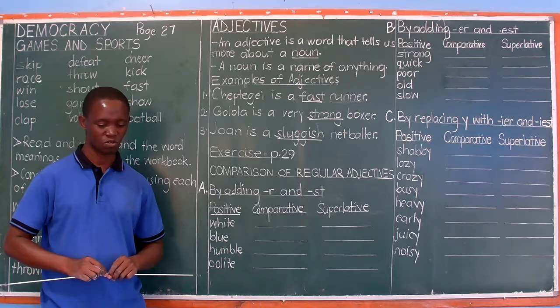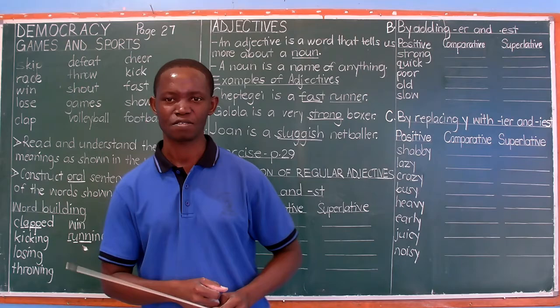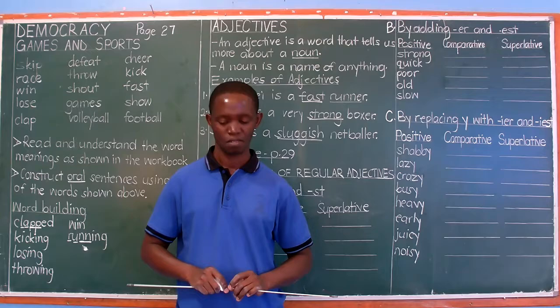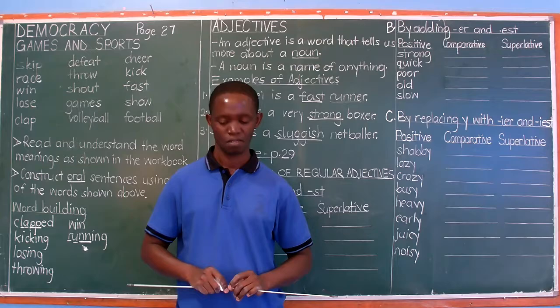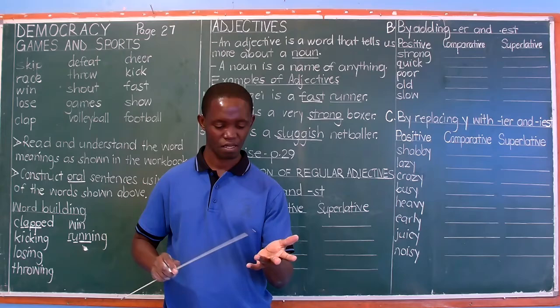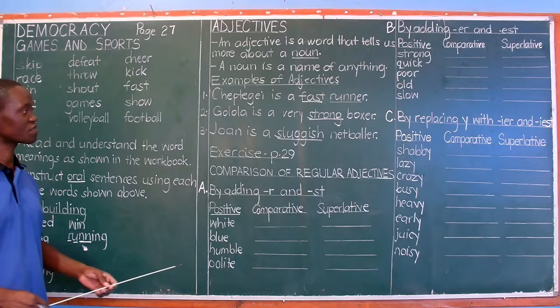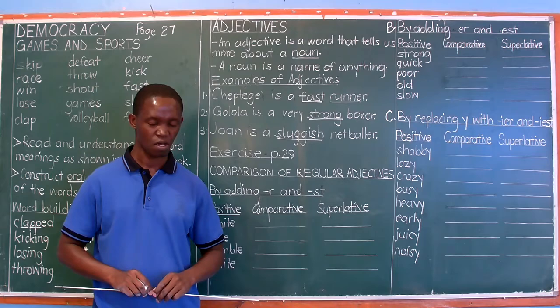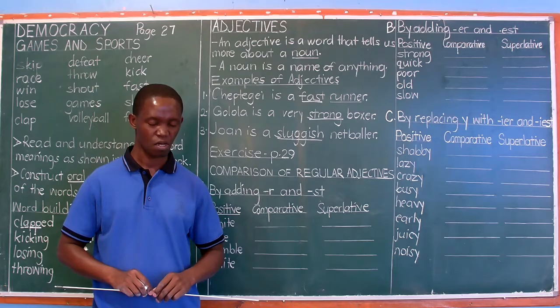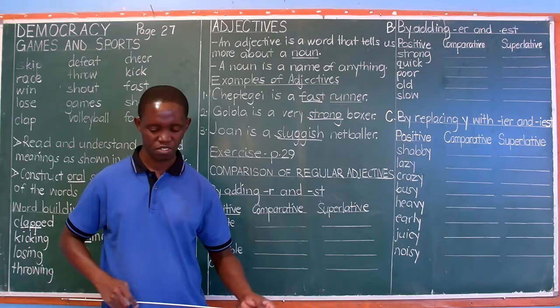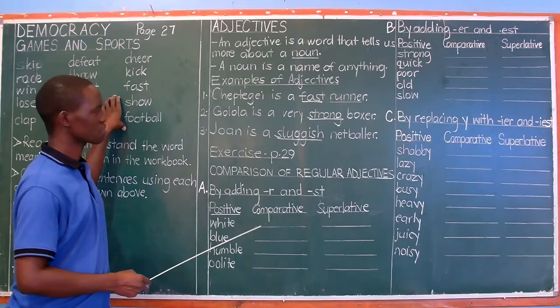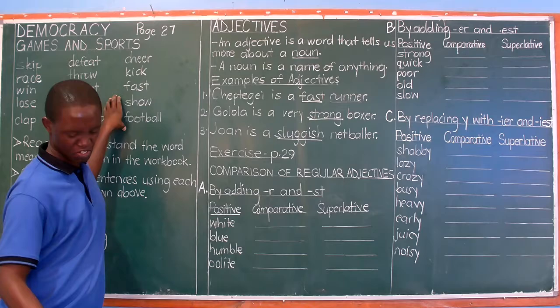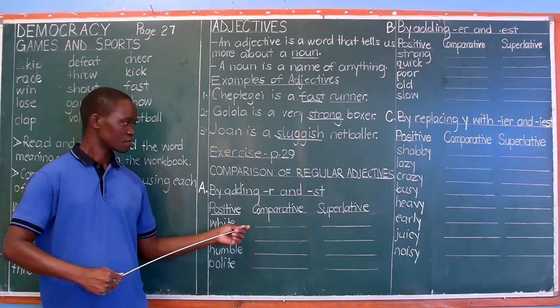Read and understand each sentence first before you start underlining. Identify the adjective, identify the noun it is describing, then you will be able to underline the right word. Some adjectives come before the noun; others can come in any position. For example, 'Mount Elgon is very high' — 'high' is the adjective, used in end position. Do that activity with great care — just underlining — and the teacher will give you ten marks.